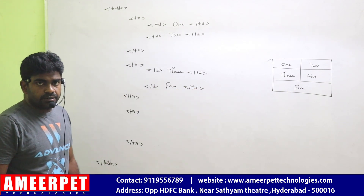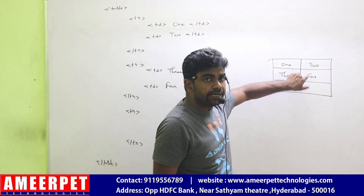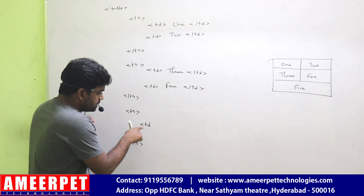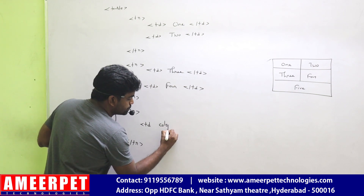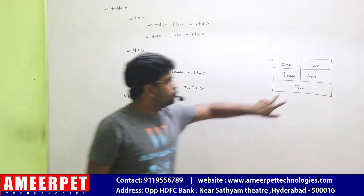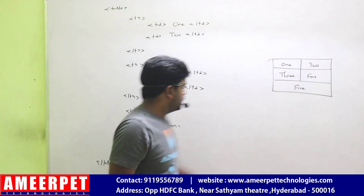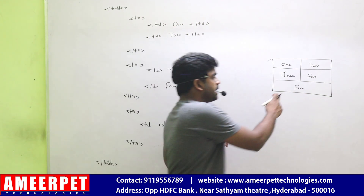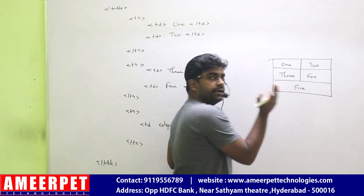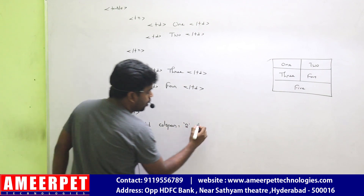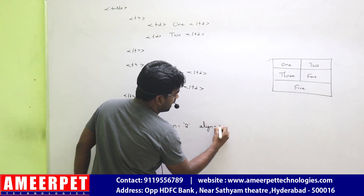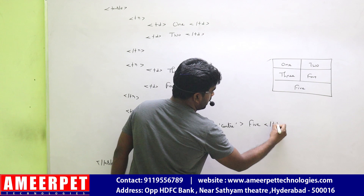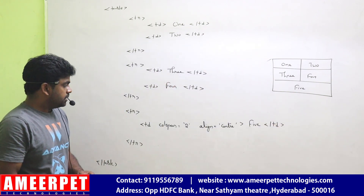Now for the last row, these two columns need to be merged. To do that, inside the TD we use the attribute col span. If you want to merge two columns, set col span equals two. When you merge and write value five, it will appear on the left side by default. To center it, after col span specify align equals center.